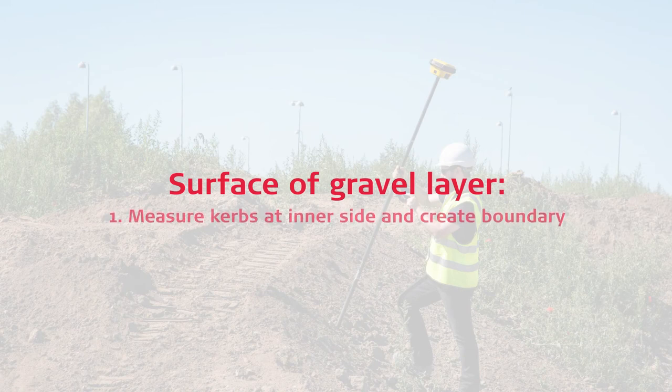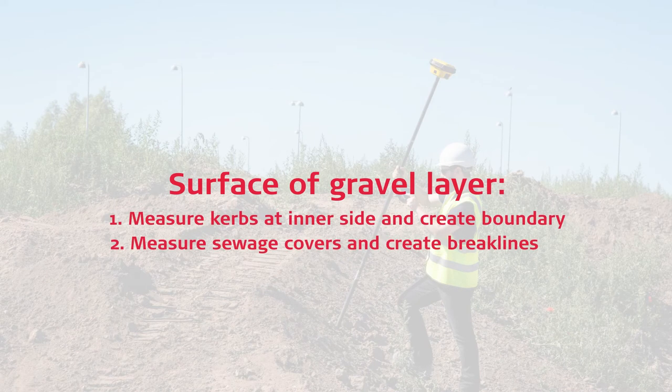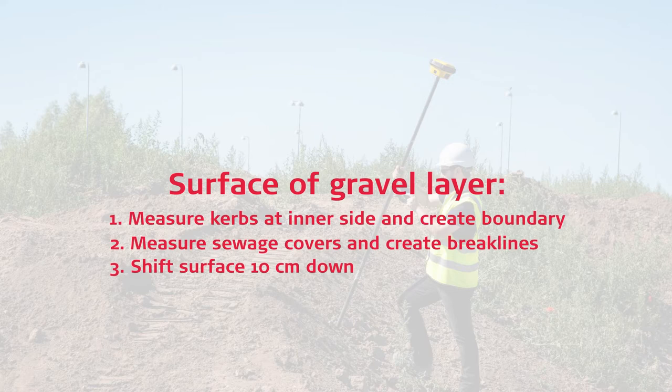First we will measure the inner side of the curbs and create the boundary. Second we will measure the sewage covers and add brake lines between these points and the edge points. Third we will shift the created surface down, and on top a layer of asphalt will finalize the parking lot.